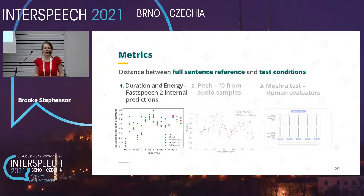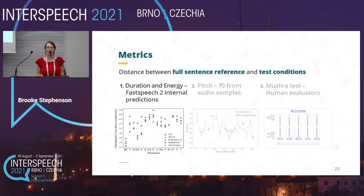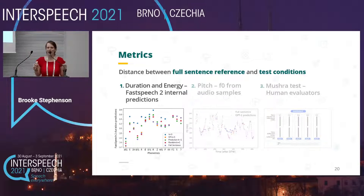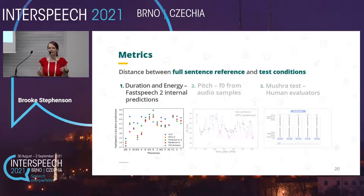To evaluate differences in quality, we use both objective and subjective measures, comparing the full sentence reference and the test conditions. To measure changes in duration and energy, we used FastSpeech 2's internal predictions. For example, looking at an example sentence 'Are there bears up there?', phonemes are on the x-axis, the purple dots represent the FastSpeech 2 prediction with the full sentence, and other colors represent the test conditions. We measure the distance between those.